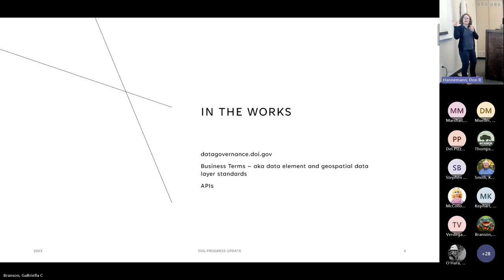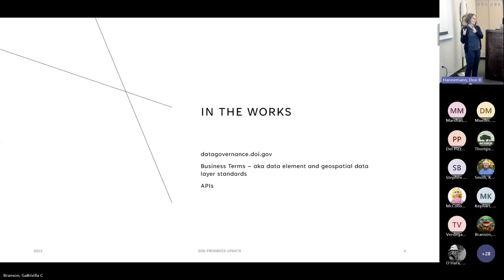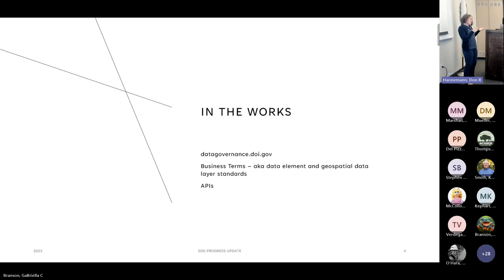When EDGE was initially launched, it was under data-inventory.doi.gov. Since then, we've decided to decouple EDGE from the DOI data inventory application to clarify that there's a difference between EDGE and that other system. We're waiting on security certificates to switch EDGE over to data-governance.doi.gov as its namespace. Ongoing work includes refining data element and geospatial data layer standards — previously these were managed in PDF documents on a website, which made change tracking impossible.